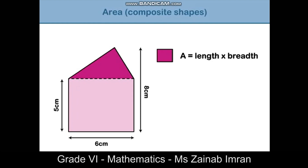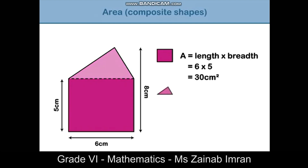Since we don't know the height of the triangle, we will have to work it out. The height is 8 minus 5, which equals 3 centimeters. Substitute the values of the base and height into the formula: half times 6 times 3 gives an answer of 9 centimeters squared.